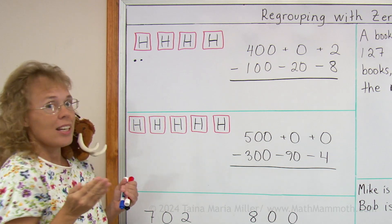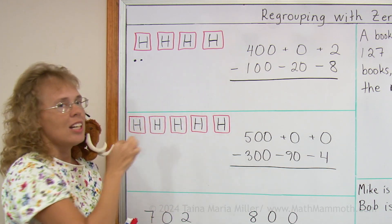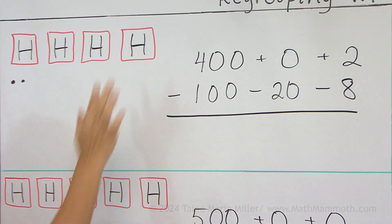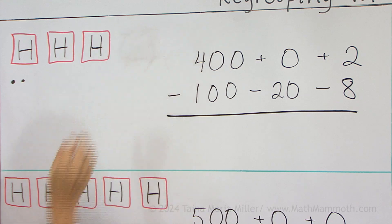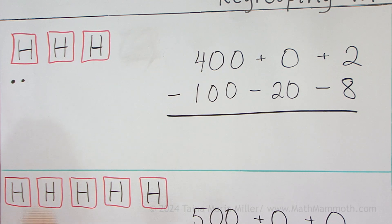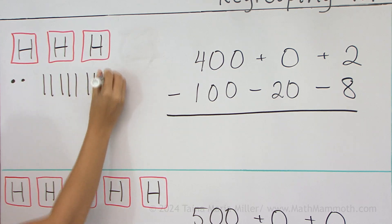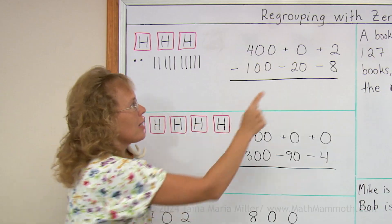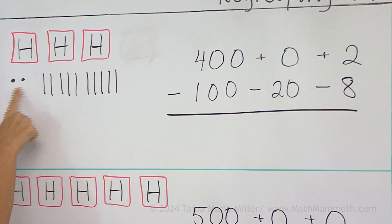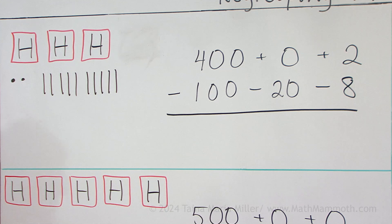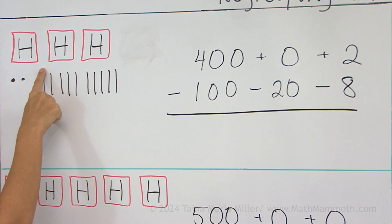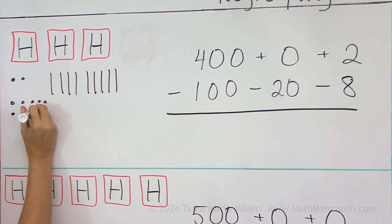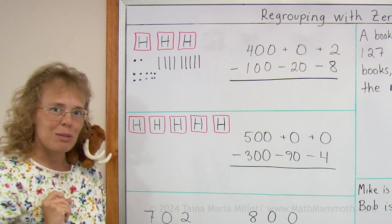The only thing I can do is to take one of these hundreds and break it down into ten tens. So this hundred needs to be broken down into ten tens. But I still cannot subtract 8 ones — I don't have 8 little dots here. So now I need to take one of these tens and break it into ten ones. Now I'm ready to subtract.